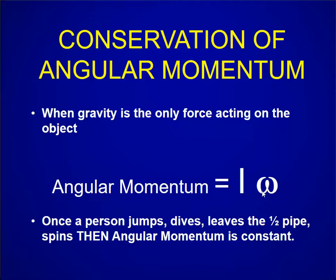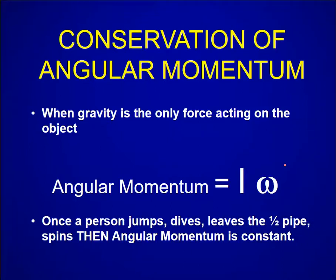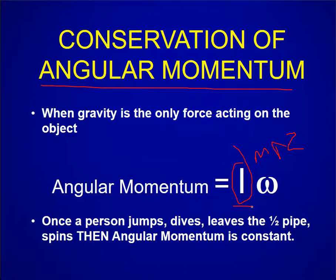Now that we've talked about the moment of inertia — which is mass times the radius squared — we can now talk about the conservation of angular momentum. That is where we can do really fun things in sport and motion. When gravity is the only force acting on the object, you have conservation of angular momentum, which is your moment of inertia times your angular velocity.